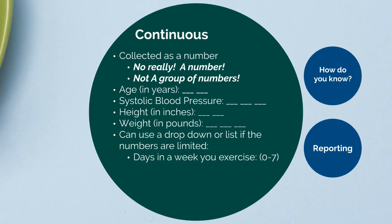Days in a week is a good example — there are only eight numbers: 0 through 7, the days you may exercise in a week. You could have people select that from a drop-down and use it numerically. You wouldn't want to do this for something like 'in the past year, how many days have you done this?' because that list is too long, so you'd leave that for them to enter a number. Think about things like lab values — those should be reported back in units. Anything you can add up and divide by the number observed to get a mean is a continuous variable.